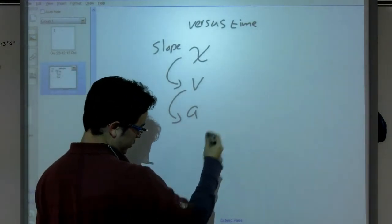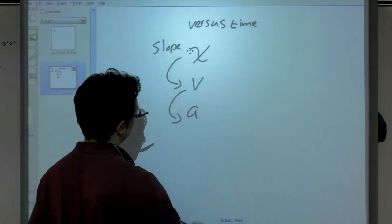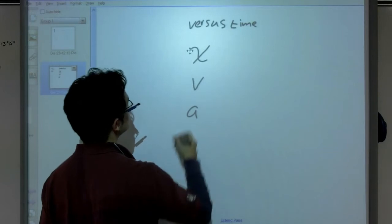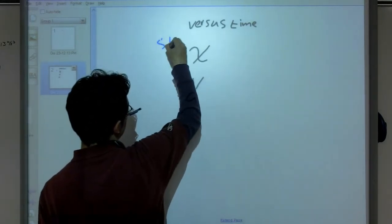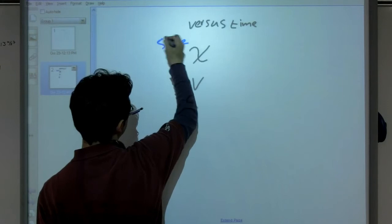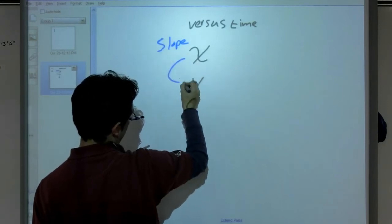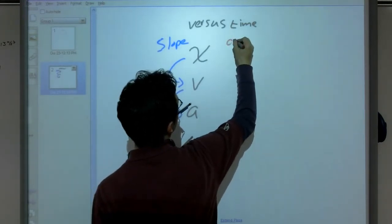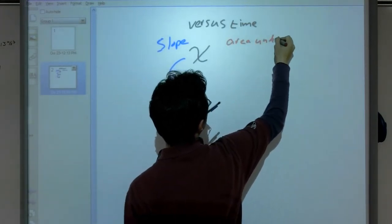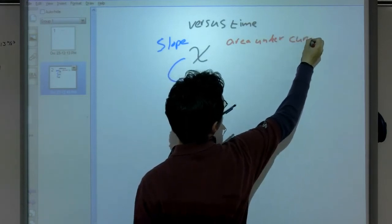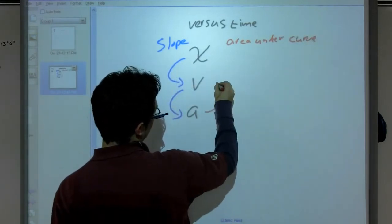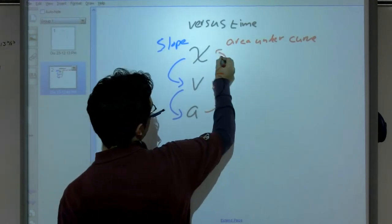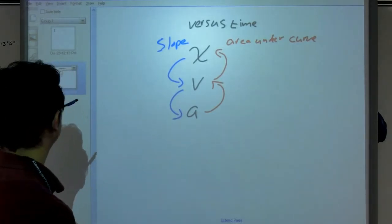And then the other steps that I had, in fact, let's redo that with color, shall we? So we'll do slope and area under the curve. If we look at the area under the curve from an acceleration versus time, we can find out our velocity. And from our velocity versus time, we can get our position.